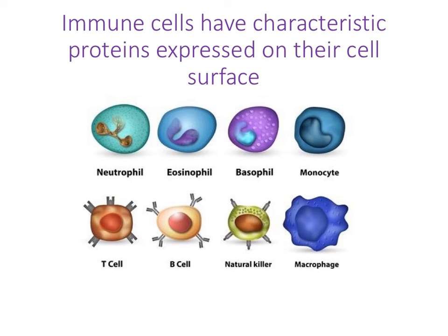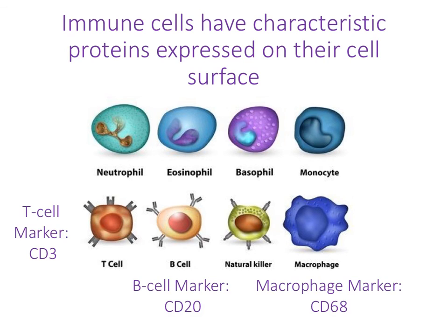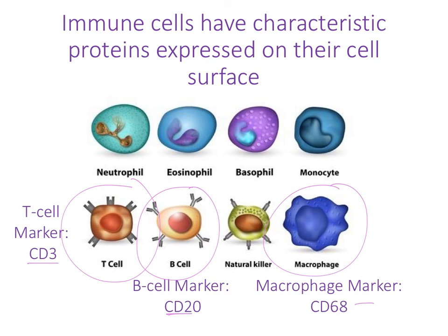The cell surface of immune cells is very rich in exposed proteins. The three markers we're going to use in the practical are: a marker of T cells called CD3, a marker of B cells called CD20, and a macrophage marker called CD68. You might want to go and find out what those different proteins are, as they're very characteristic signatures of those particular cell types.